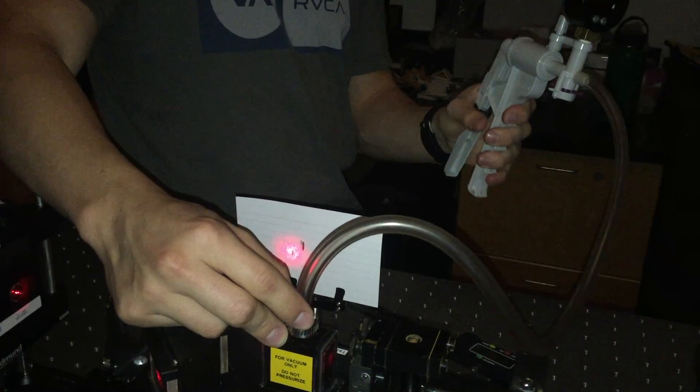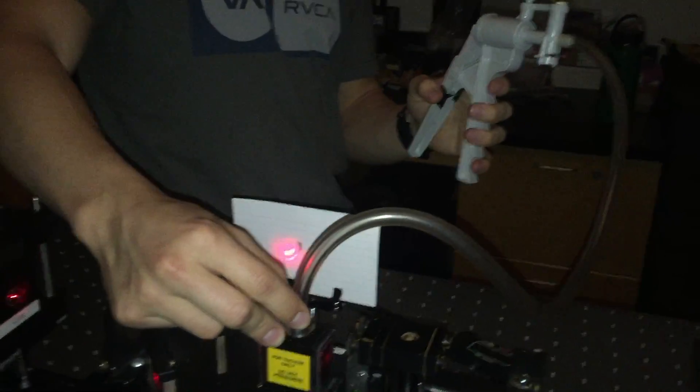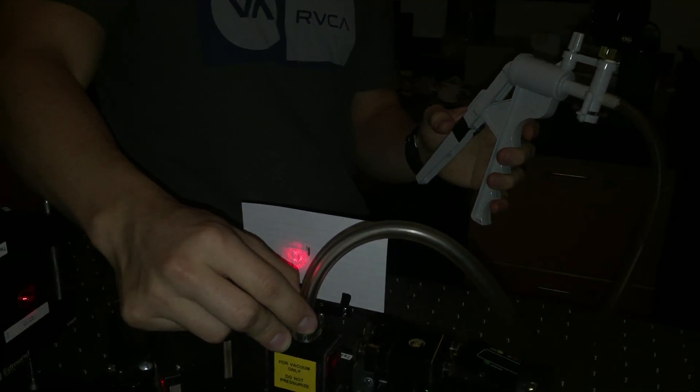As we increase the pressure inside the cell, we're increasing the index of refraction as well. We can see the fringes collapsing inward, which means the OPD of the whole system is decreasing.